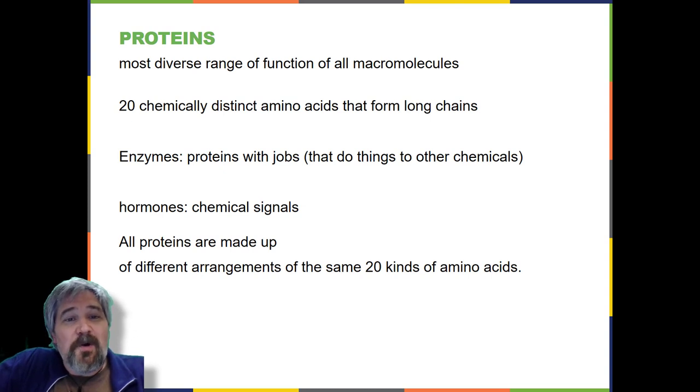Proteins. Proteins are one of the most abundant organic molecules in living systems and have the most diverse range of functions of all macromolecules. Proteins may be structural, regulatory, contractile, or protective. They may serve in transport, storage, or membranes. Or they may be toxins or enzymes. Each cell in a living system may contain thousands of different proteins, each with a unique function. Their structures, like their functions, vary greatly. They are all, however, polymers of amino acids arranged in a linear sequence. The functions of proteins are very diverse because there are 20 different chemically distinct amino acids that form long chains and the amino acids can be in any order. For example, proteins can function as enzymes or hormones. Enzymes, which are produced by living cells, are catalysts in biochemical reactions, like digestion, and are usually proteins.